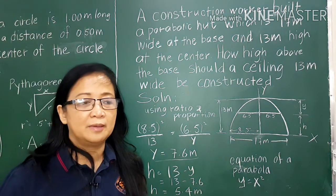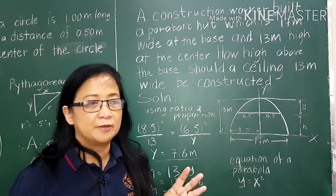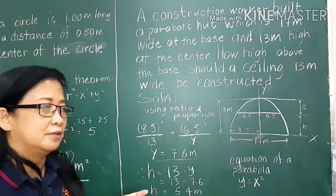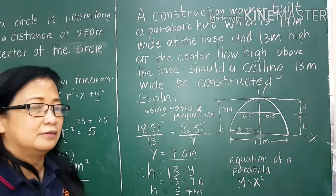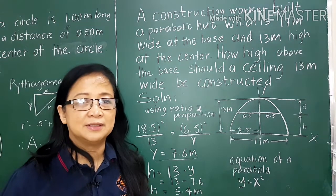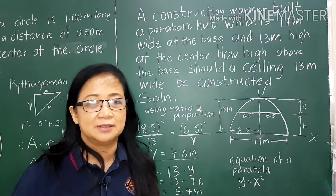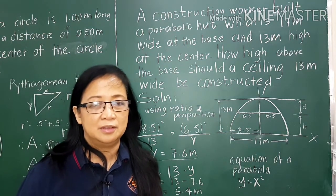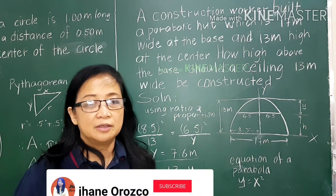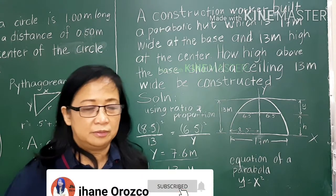Ratio and proportion is really very important in solving a problem. When there are four quantities and one of them is unknown, you can use ratio and proportion.